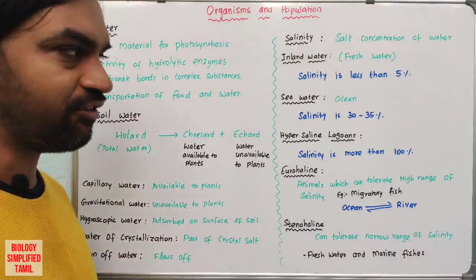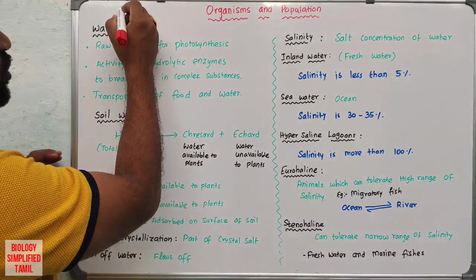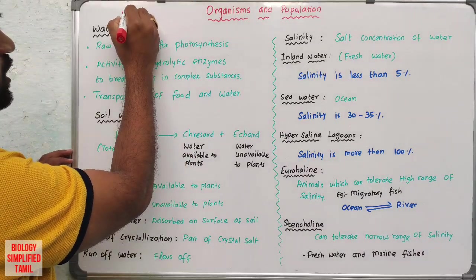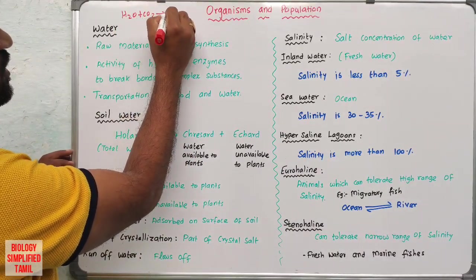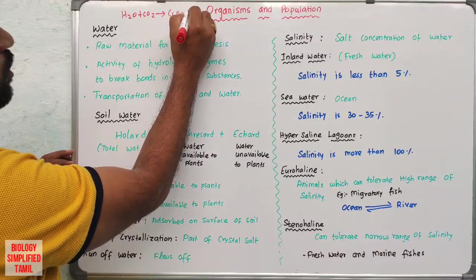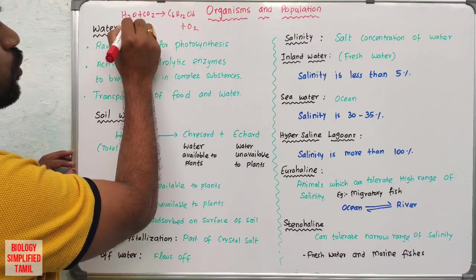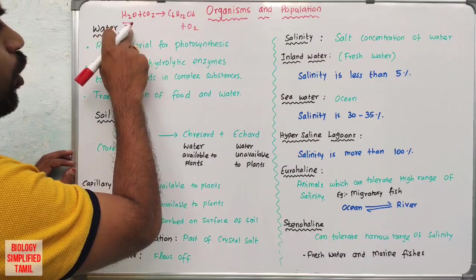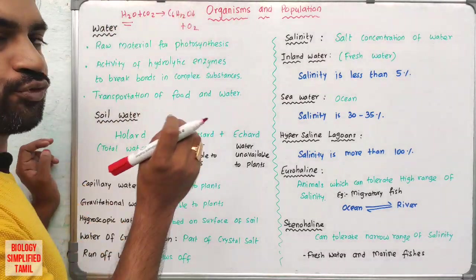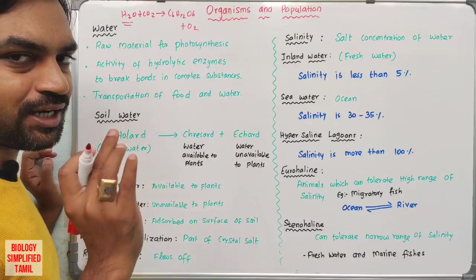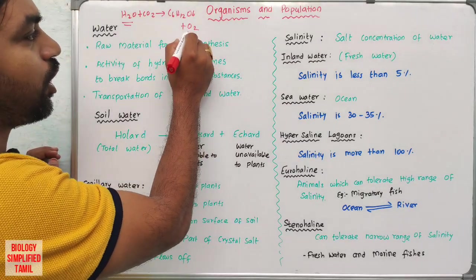Water is a raw material for photosynthesis. The equation is H2O plus CO2, which gives rise to C6H12O6 plus oxygen. So, water is one of the raw materials for photosynthesis — it is essential for plant food synthesis.